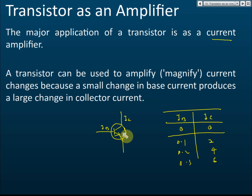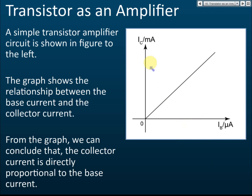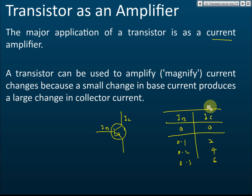If we plot a graph of IC against IB — note that IC is in milliamps and IB is in microamps, and one milliamp is 1000 times higher than one microamp — we get a straight line through the origin. This confirms that IC is directly proportional to IB, and IC is much higher than IB.